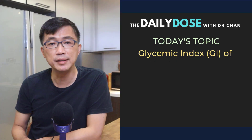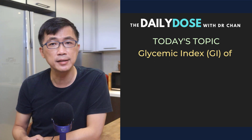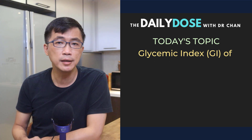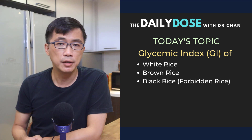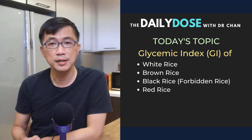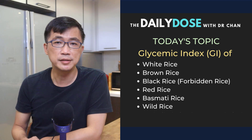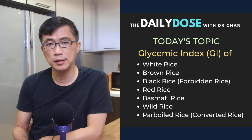In this video, I'm going to do a short tutorial on the glycemic index or GI of the different types of rice that we usually find in the supermarkets, including white rice, brown rice, black rice, red rice, basmati rice, wild rice, parboiled rice, also known as converted rice.